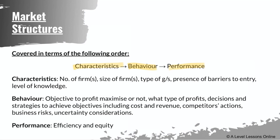For characteristics, I'll be talking about the number of firms, the size of firms, the type of goods and services, the presence of barriers to entry (BTE) — a very important concept — and the level of knowledge: is there imperfect knowledge or perfect knowledge available in the market?